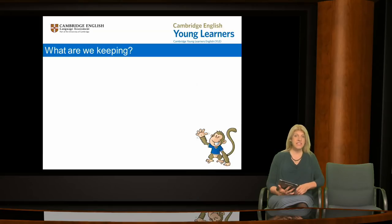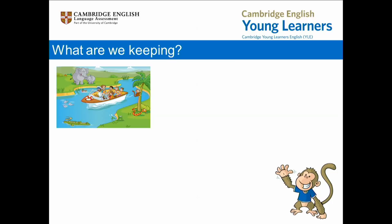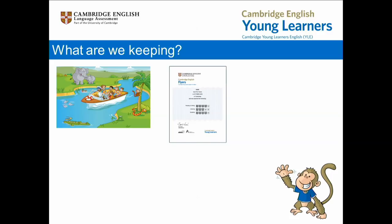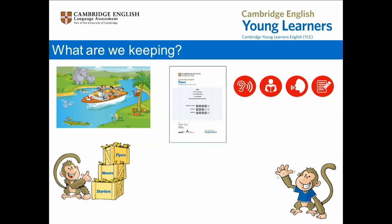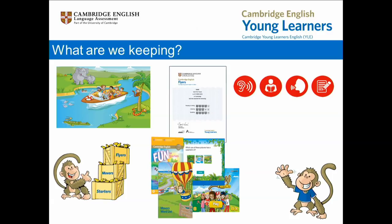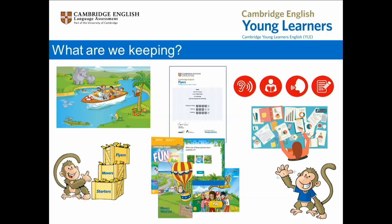Based on that feedback, here are some of the things we are keeping the same: the colourful and fun activities that motivate primary school aged learners and reflect sound teaching methodology; the fact that there is no pass or fail — every child receives a certificate that rewards their achievement; the importance of testing all four skills — reading, writing, listening and speaking; the step-by-step progression through the levels — starters, movers and flyers — which are designed to allow children to build on their skills as they move up; the wide range of support materials available; and the research underpinning the tests.